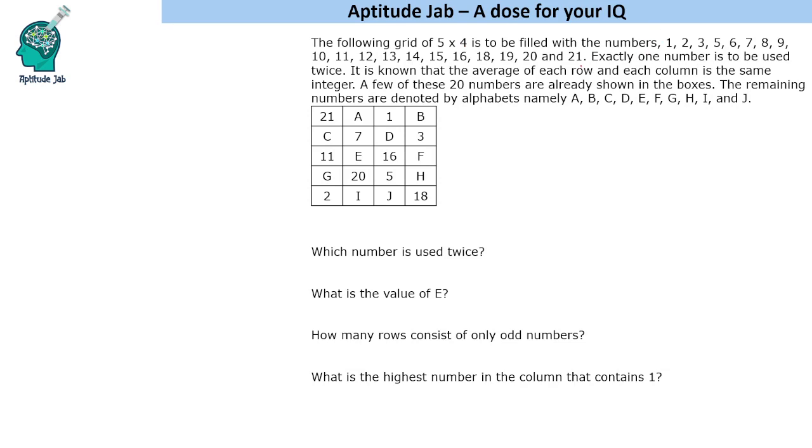...5, and so on up to 21, and one number is used twice. It is known that the average of each row and each column is the same integer. Some numbers are given and the others are denoted by A, B, C, D, and so on up to J.